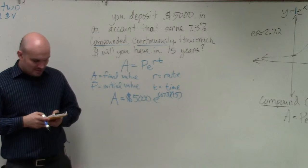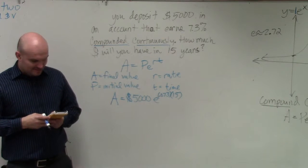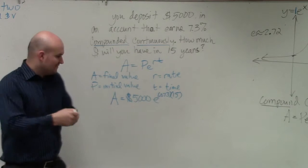So I'm going to do 0.073 times 15. That gives me 1.095.